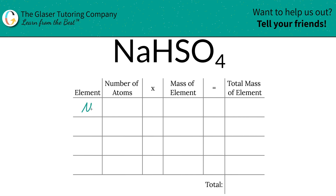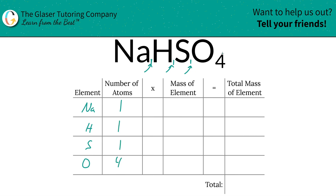The first thing we're going to do is write the elements we see in the compound. So we've got sodium, hydrogen, sulfur, and oxygen. Next is to identify the number of atoms, and that's where the subscripts come into play. If you don't see a subscript at the bottom of that particular element, simply plug in a one because that's what it is assumed to be. So sodium has one atom, hydrogen is one, sulfur is one, and oxygen is four.